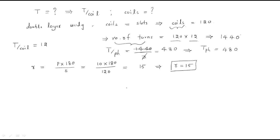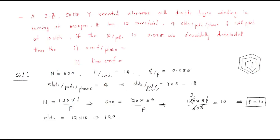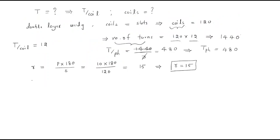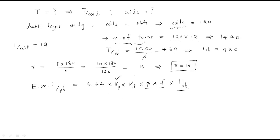Now we apply the EMF formula. The EMF per phase formula for an alternator is: E_phase = 4.44 × Kp × Kd × flux × frequency × turns per phase. We need the short pitch factor Kp and the distribution factor Kd. Kp = cos(α/2) = cos(15/2) = cos(7.5°) = 0.965.